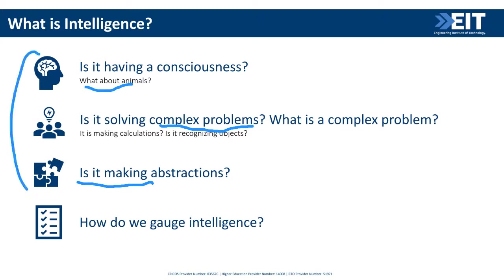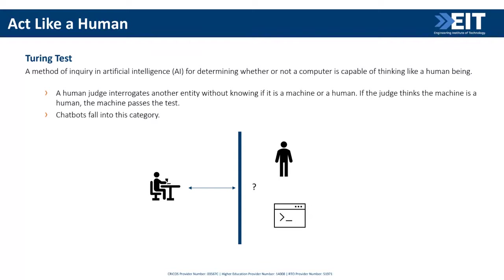How do you gauge intelligence — how do you tell that something is intelligent? There are different ways. We'll call these things 'agents' from now on. An agent could be a robot or a software tool that receives inputs and produces outputs. It's like talking to someone on the phone: there's a software agent somewhere receiving your inputs and responding.